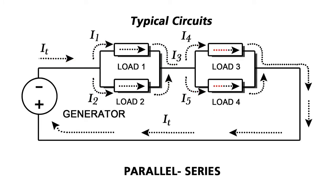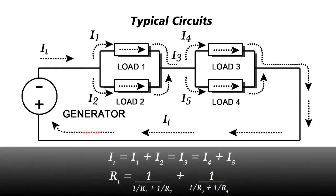A parallel series circuit combines elements of both. Current passes through a series of parallel resistances. Let's see how these circuit fundamentals apply to clamp-on ground measurement.